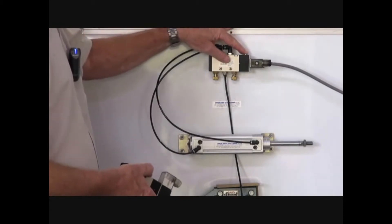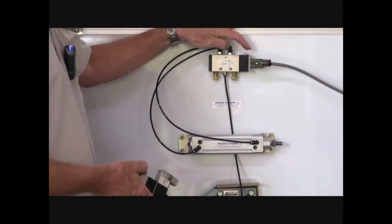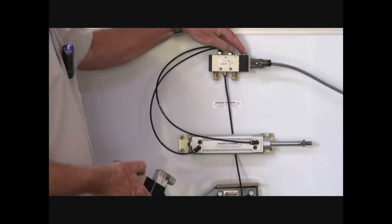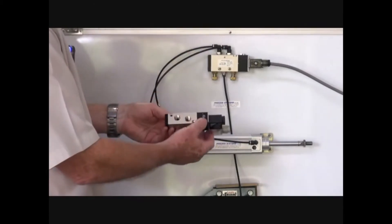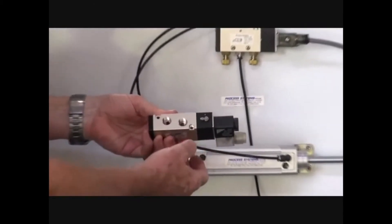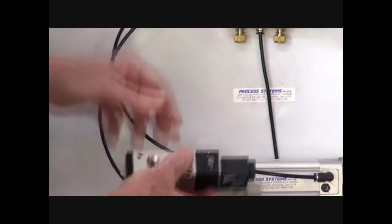It has a manual override function, which manually operates the unit without any electrical signal. It can also rotate and hold in. Same unit shown here. Rotate it and it locks in. Rotate it back and it unlocks.